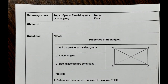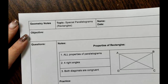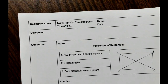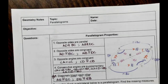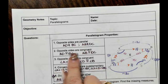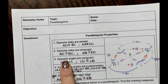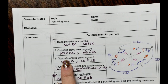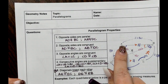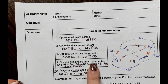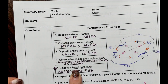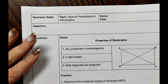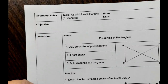Recently we talked about parallelograms. In order to be a parallelogram, remember that you need opposite sides to be parallel, opposite sides to be congruent, opposite angles to be congruent, consecutive angles to be supplementary (adding to 180°), and diagonals bisect each other. Today we're going to talk about a special parallelogram: the rectangle.